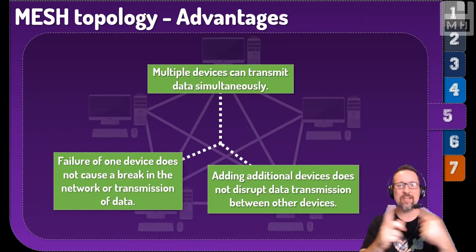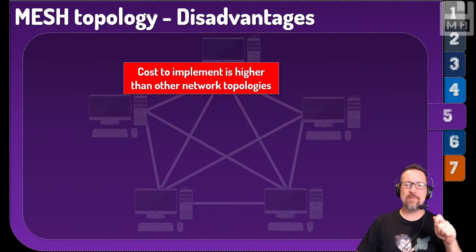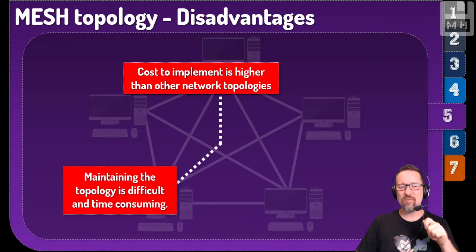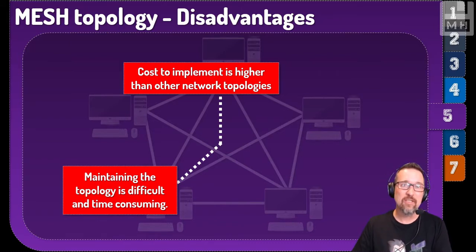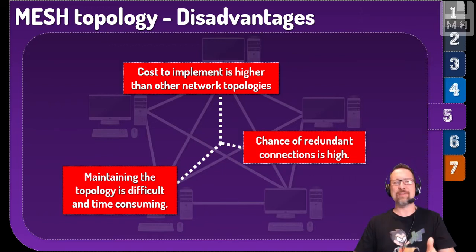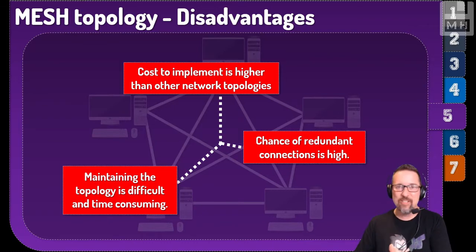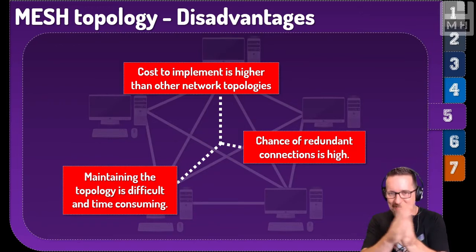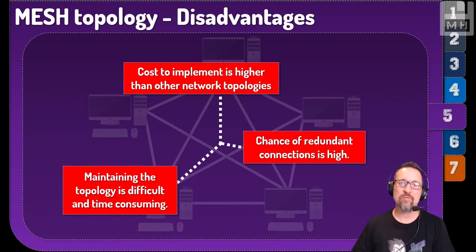Some disadvantages of mesh topology: it is much more expensive to implement than other topologies. Maintaining a mesh network can be very difficult and time-consuming, requiring a specialized network administrator. The chance of redundant connections is high — redundant meaning inefficient or not working properly — and when parts of the network go down, finding and troubleshooting the malfunctioning node slows down the entire network.